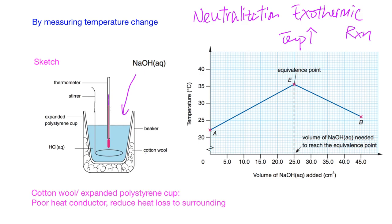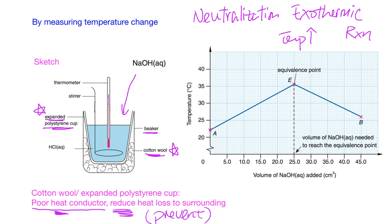In this setup we have used cotton wool, a beaker, and expanded polystyrene. The expanded polystyrene and cotton wool are used because they are poor heat conductors — remember to mention the word 'heat' here, because 'poor conductor' alone could refer to electricity. This helps to reduce heat loss to the surrounding. Note: it must be 'reduce' heat loss, not 'prevent' heat loss, because you can never fully prevent heat loss to the surroundings. NaOH can be added using a syringe, which allows us to measure the volume of NaOH used.